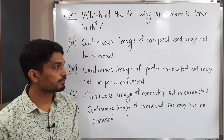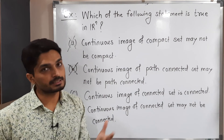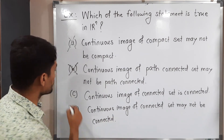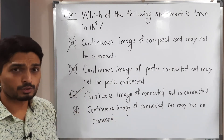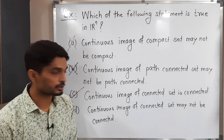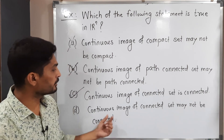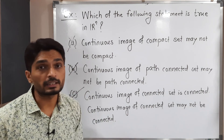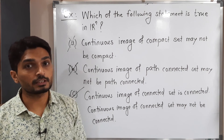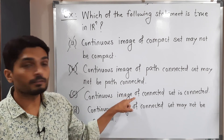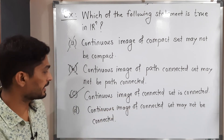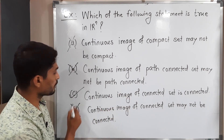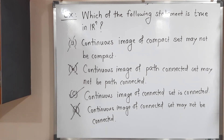Next: continuous image of connected set is connected — this is a correct result, so option C is correct. The last option says continuous image of connected set may not be connected, but actually continuous image of a connected set is always connected. So that option is also wrong. Therefore, C is the correct option.